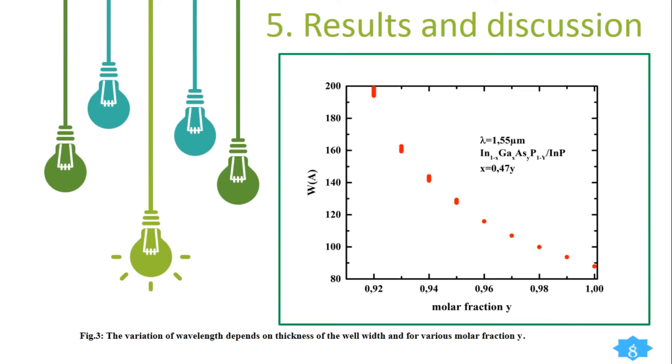Figure 3 is the result of variation of well width as a function of molar fraction y. It shows that for molar fraction y equals 0.92, 0.93, 0.94 until 0.95, the well width takes a large value, from 200 to 130 angstroms. Whereas the number of energy levels increases.